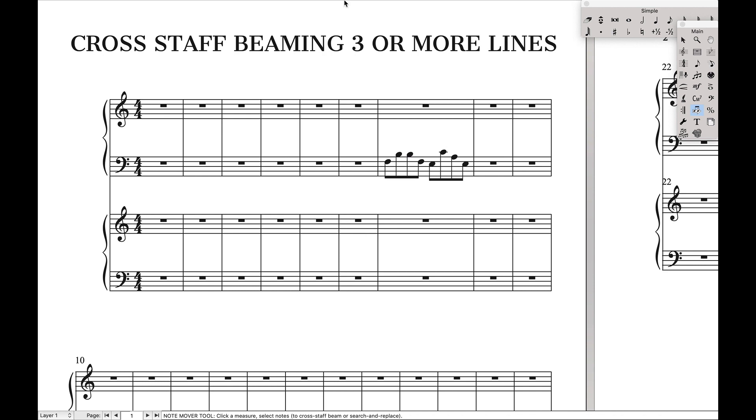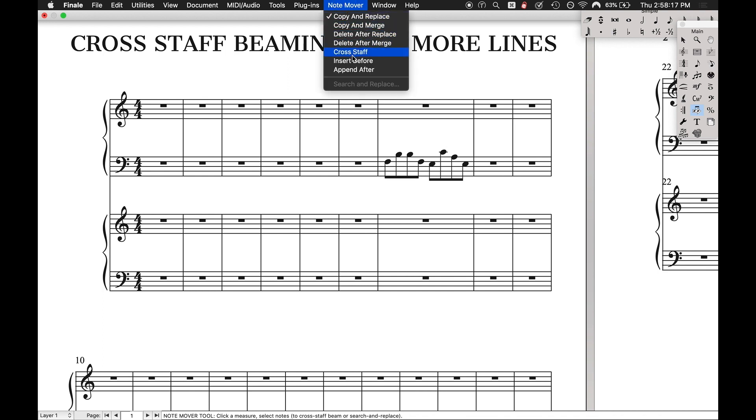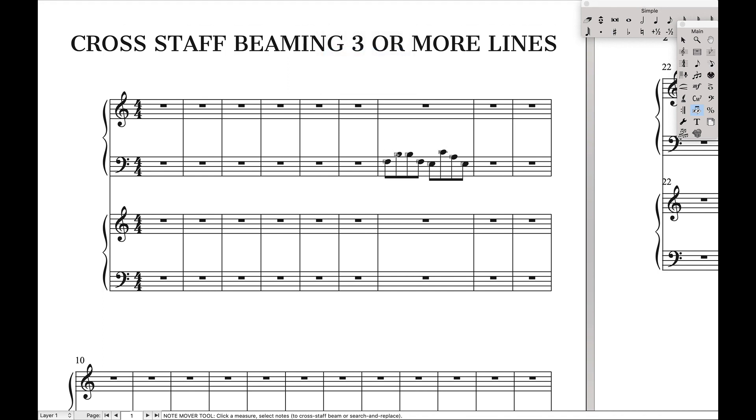So instead, we're going to come back up here to the note mover tool and hit cross staff. And then we select a note and we can drag it down. And it will automatically cross staff beam. And then we could take a note over here and drag it up. And it will cross staff beam. Drag a note and take it all the way down. And it will cross staff beam across all four staves. And you can do this among any number of staves you want.